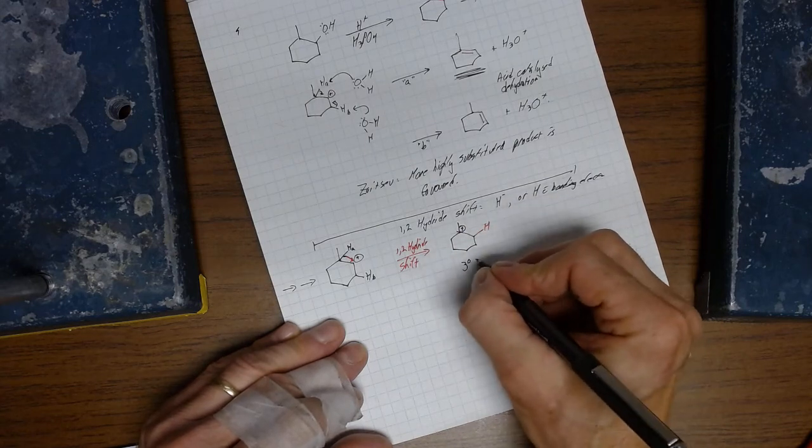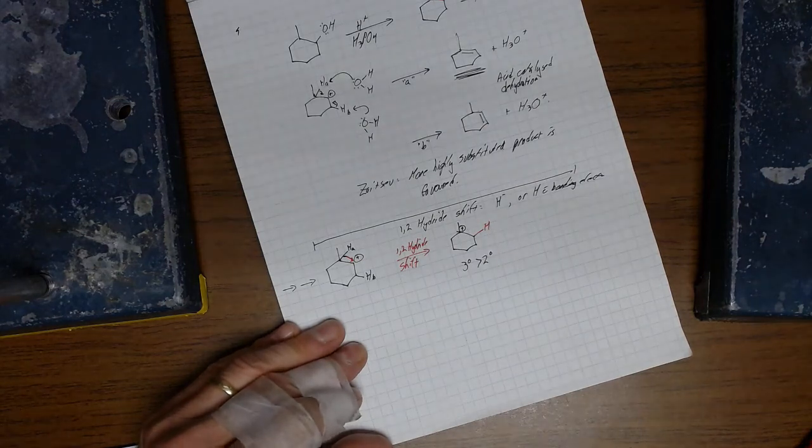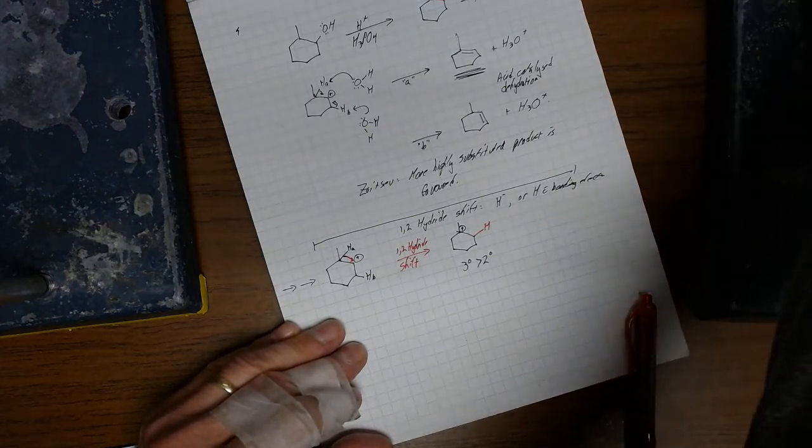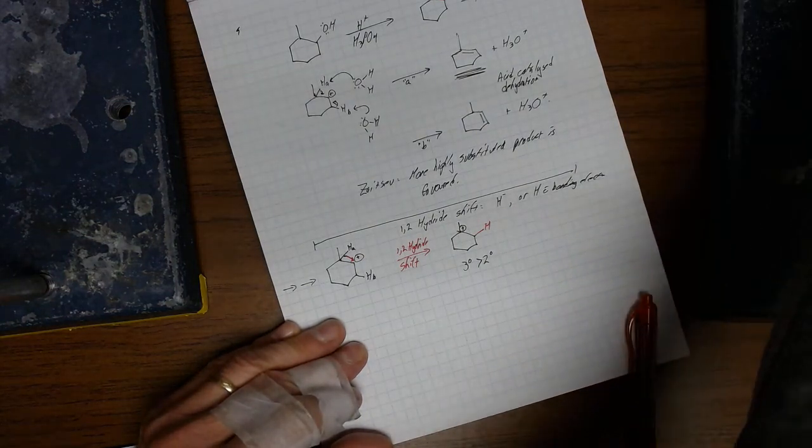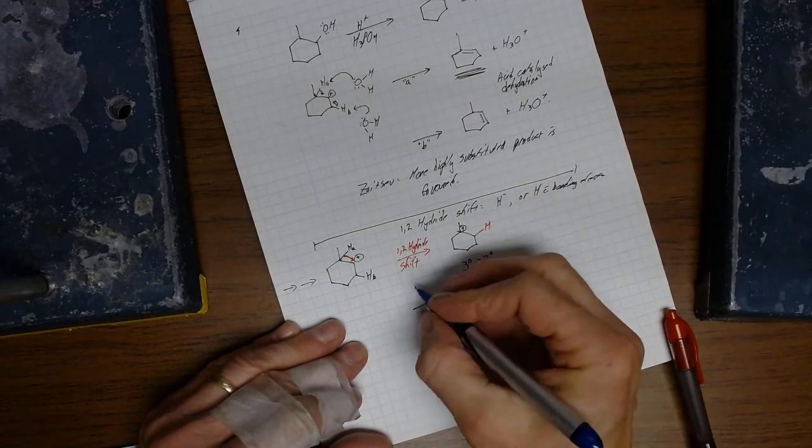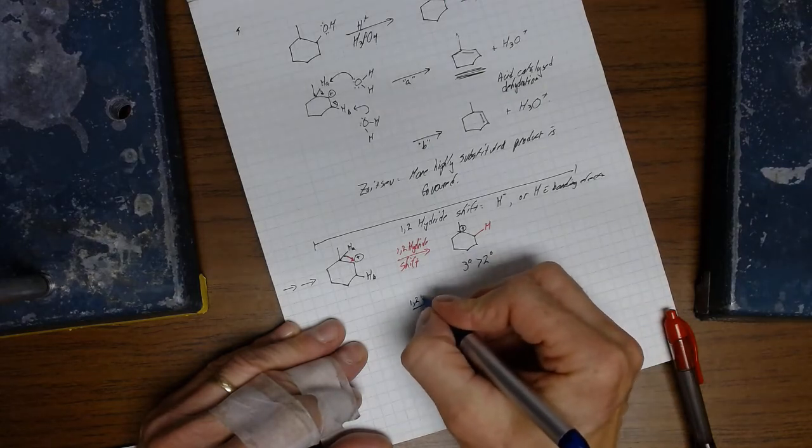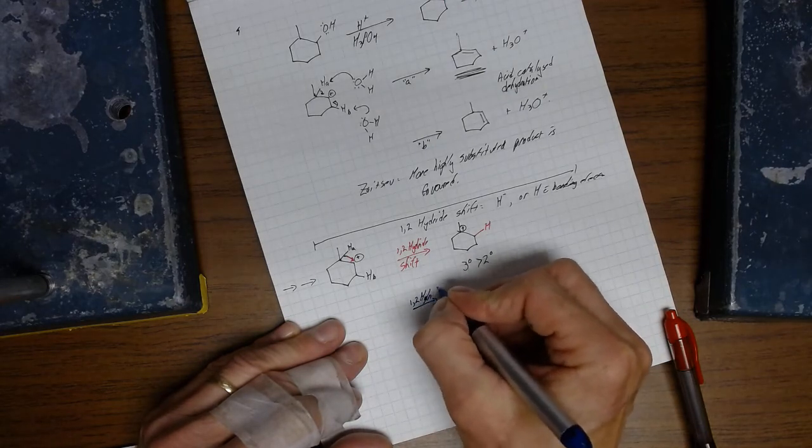And, a tertiary carbocation is more stable than a secondary carbocation. We could get a hydride shift where the blue hydrogen shifts, or the B hydrogen, and again, this is a 1,2 hydride shift.